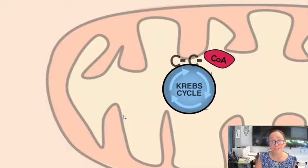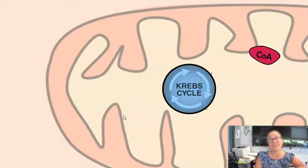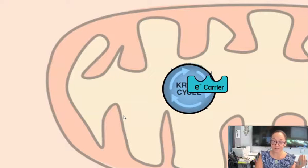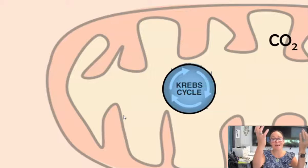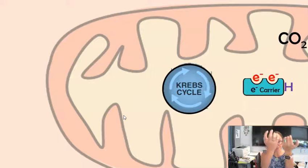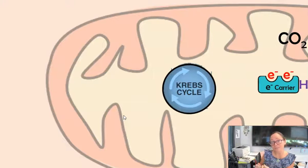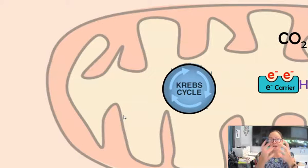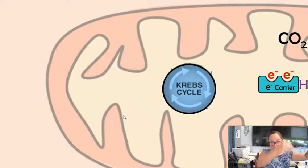The purpose of the Krebs cycle is to get any remaining energy in the form of electrons. We take an electron carrier, NAD+, and during the chemical reaction it takes electrons and a hydrogen — we call this a reduced electron carrier, technically NADH. In that process, a carbon dioxide is released and the electrons are placed onto an electron carrier.